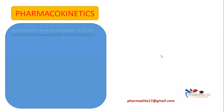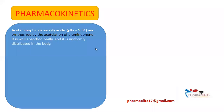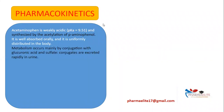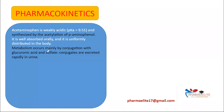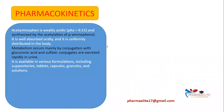Regarding pharmacokinetics: paracetamol is weakly acidic and is synthesized by acetylation of para-aminophenol. It is well absorbed orally and uniformly distributed in the body. Metabolism mainly occurs by conjugation with glucuronic acid and sulfate, and these conjugates are excreted via urine. It is available in various formulations including suppositories, tablets, capsules, granules, and solutions.